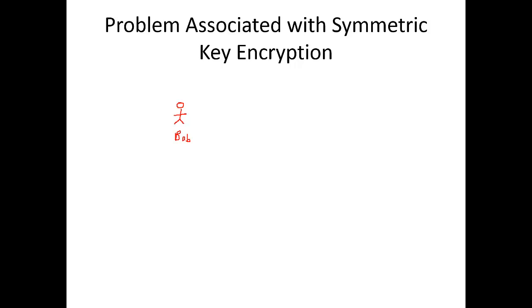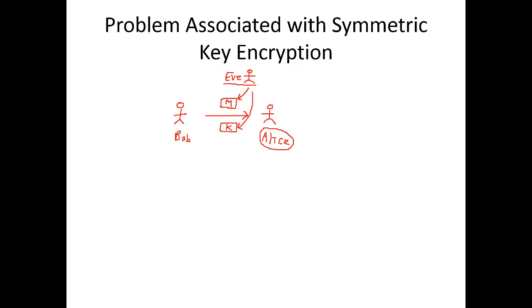Let's say you're Bob and you have Alice receiving your message. The message is sent and happens to be encrypted, and Eve is actually listening. Before Alice is able to decrypt the message, Bob needs to send a key so that Alice can use it to decrypt the message. Eve is listening and she can intercept both the message and the key, and then do the same thing Alice is doing — which is a very bad scenario.